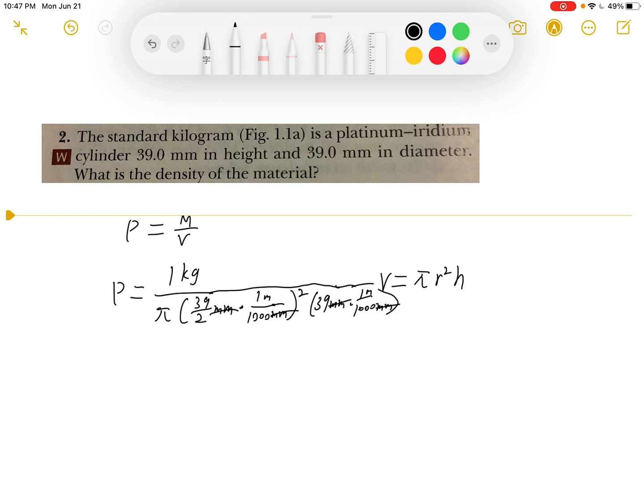After the calculation, we get the density ρ equals 2.14 times 10 to the fourth power kilograms per meter cubed. That will be our answer.